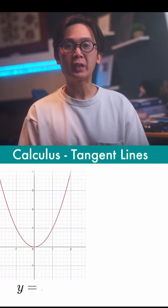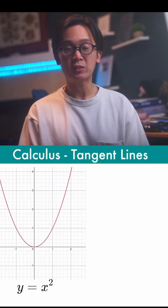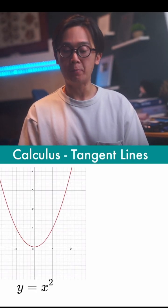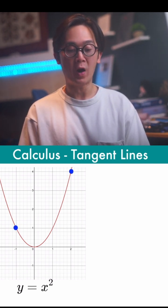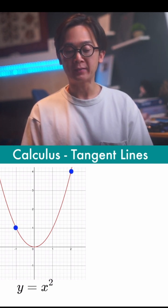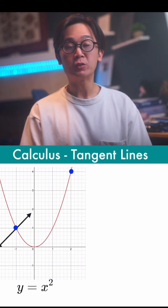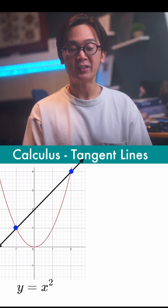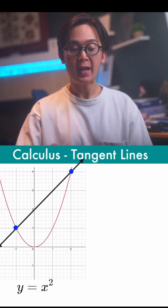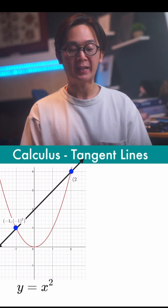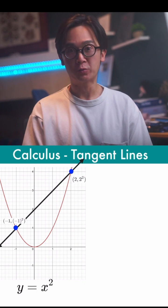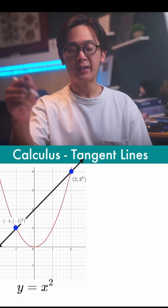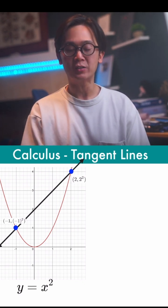Let's say we are working with a function y is equal to x squared, which is a parabola opening upward. If we have a point at negative 1 and 1, and at point 2 and 1, we'll be able to draw a line using geometry. For the first point, we have negative 1 and negative 1 squared, and for the other point, we have 2 and 2 squared, given that the function is y is equal to x squared.